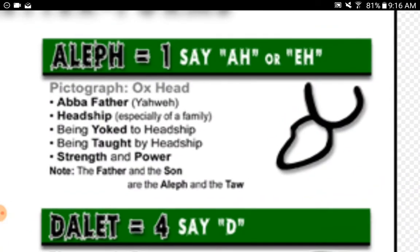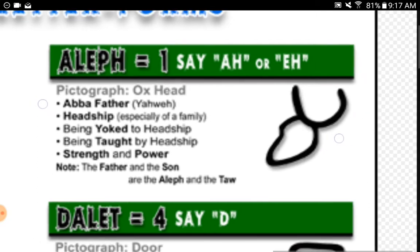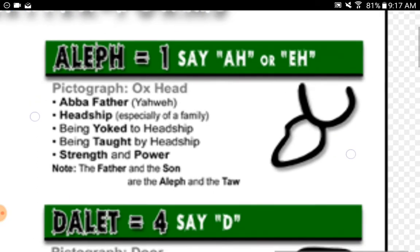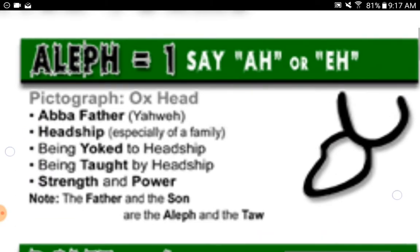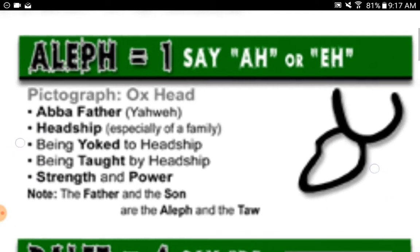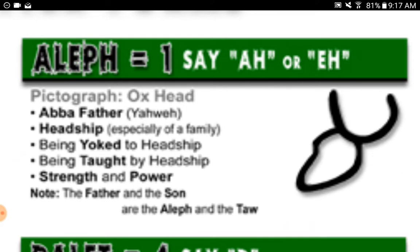Aleph equals one, say 'ah' or 'ih.' Pictograph: ox head. Abba, Father, Yahu'ah — headship, especially of a family, being yoked to headship, being taught by headship, strength and power. Note: the Father and the Son are the Aleph and the Tau.